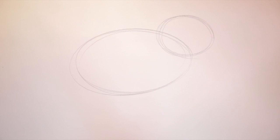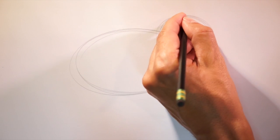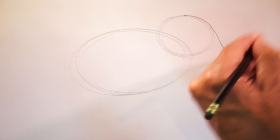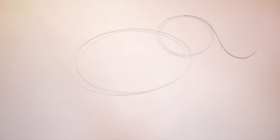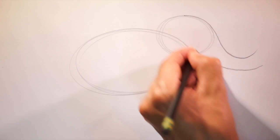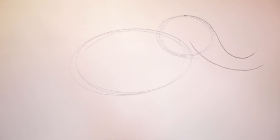Now, starting at the top of that circle, we're going to make a line that goes down around and out. That's where the trunk will go. Another line from the bottom right about here and back up towards the head. We'll work on those details later.